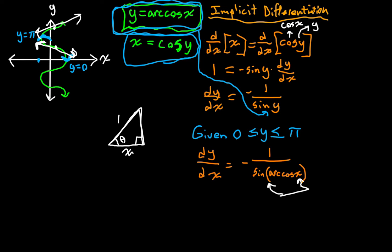Now what's the sine of that angle? Well, that's the opposite over the hypotenuse, and the opposite is going to be the square root of one minus x squared. It just comes from the Pythagorean theorem. So we can say that the sine of the arc cosine of x is equal to the square root of one minus x squared.